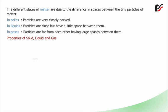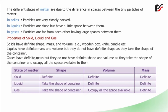Solids have definite shape, mass and volume — for example, a wooden box, knife, candle, etc. Liquids have definite mass and volume but they do not have definite shape, as they take the shape of the container. Gases have definite mass but they do not have definite shape and volume, as they take the shape of the container and occupy all the space available to them.